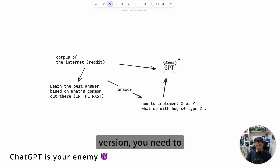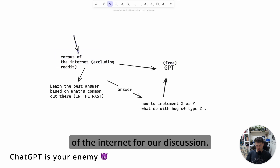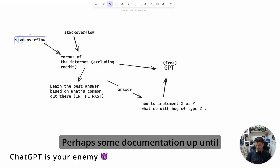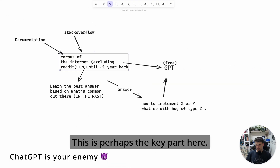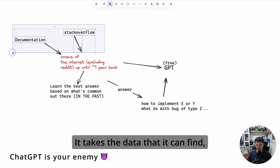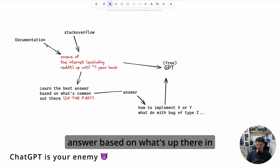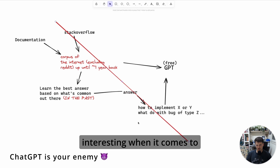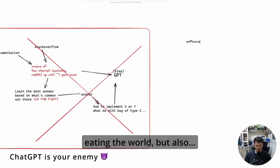With ChatGPT, it's important to remember that it learns from the corpus of the internet. For our discussion, that includes Stack Overflow and documentation, but only up until around one year back. That's the key part: it takes the data it can get its hands on and comes back with an answer based on what's been on the internet in the past. This becomes especially interesting when it comes to software development.